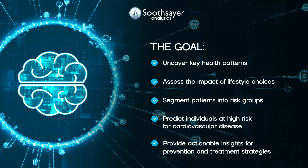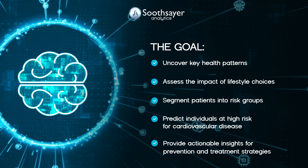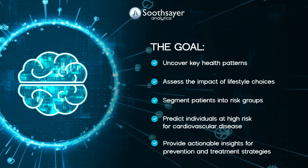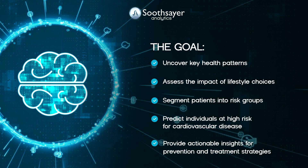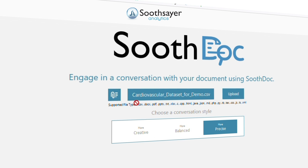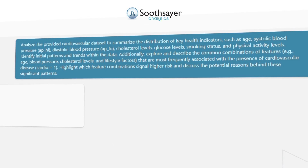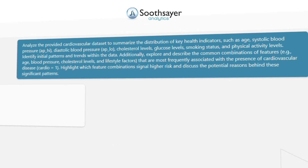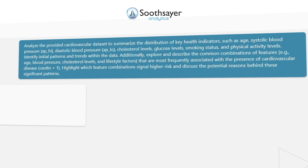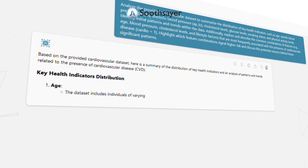We will also provide actionable insights to inform prevention and treatment strategies. Let's start by summarizing the data set to identify key health indicators and combinations of features that correlate with cardiovascular disease. This will set the stage for more targeted analysis.